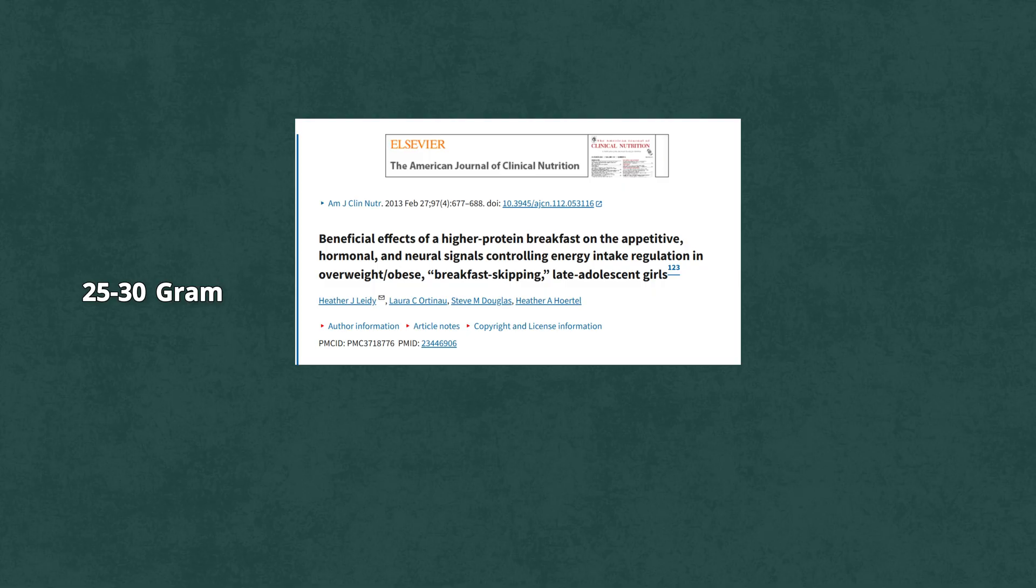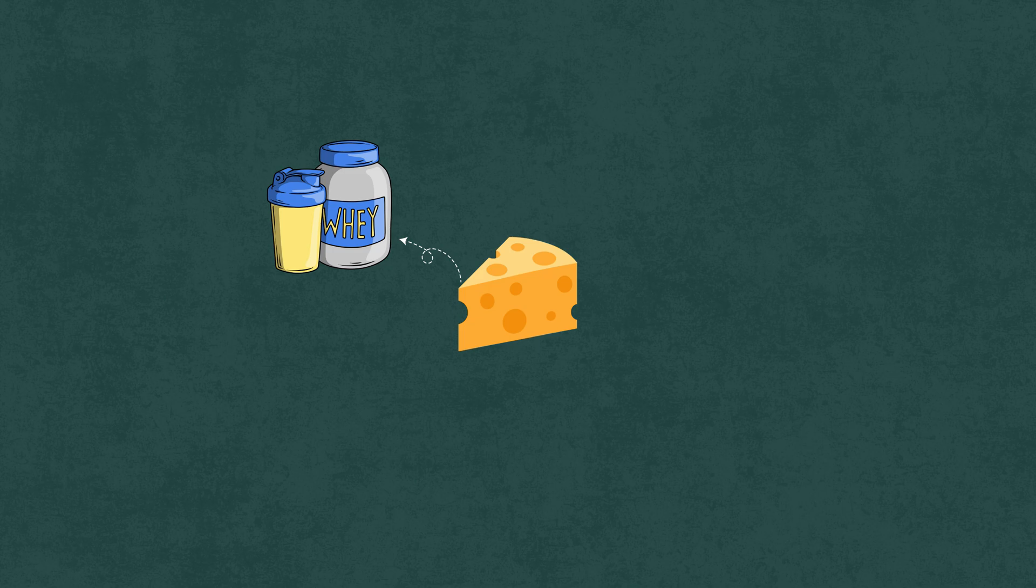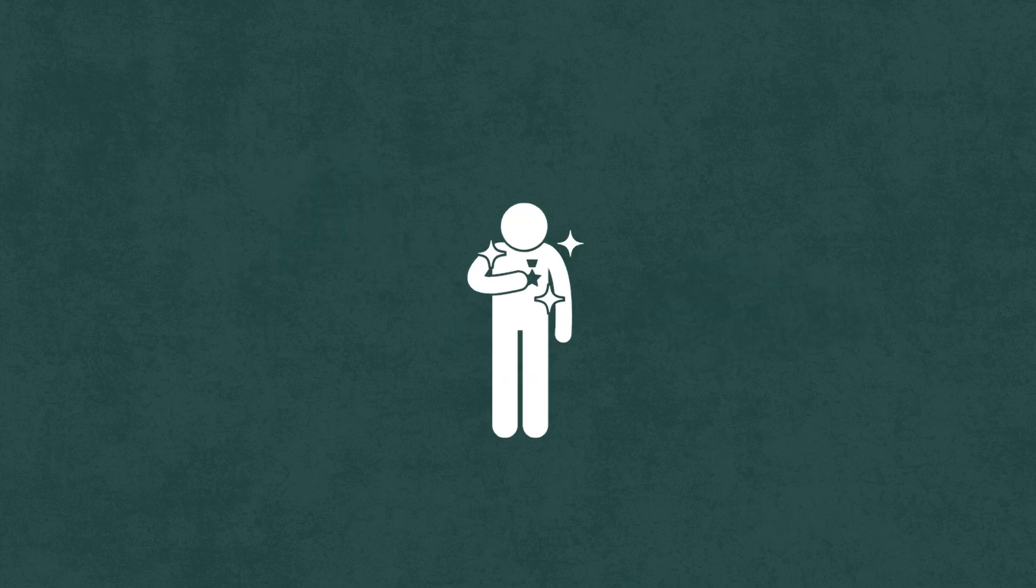The fix is simple. Aim for 20 to 30 grams of protein within your first hour of waking up. Greek yogurt, eggs, cottage cheese, or a smoothie with protein, banana, and peanut butter. It doesn't have to be complicated. But if your breakfast is all carbs and caffeine, you're training your brain to crave instant rewards and lose long-term focus.